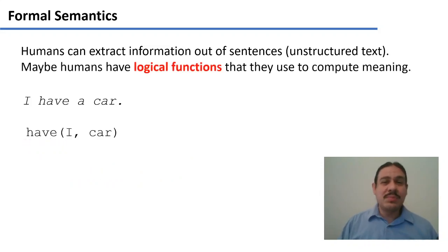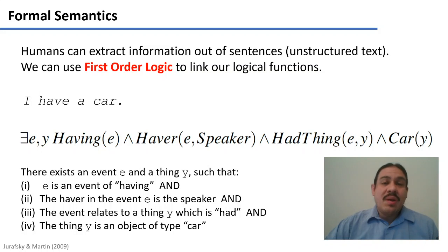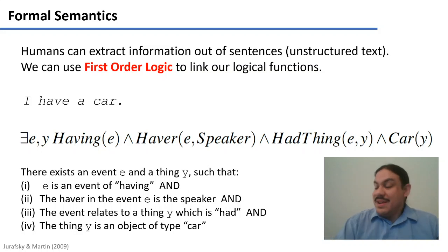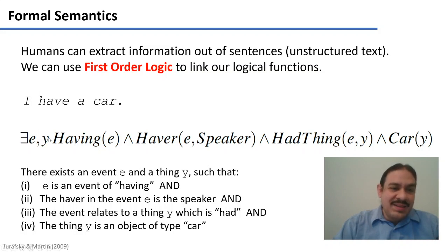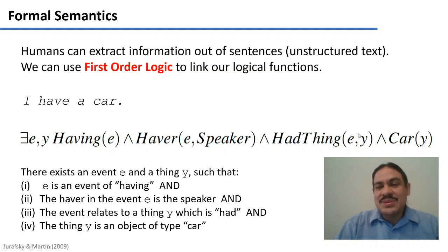Humans are probably performing a process like this all the time, where they analyze sentences. And if you have a sentence like 'I have a car,' there's the function 'have' which takes two arguments: I and car. Probably we're doing things that are even more complex — we call this first-order logic. We're probably analyzing this sentence like this: there's an event e and a thing y, such that there's an event of having, and there's a haver for the event e which is the speaker i, and there's something that is had in the event e which is the thing y, and the thing y is a car.